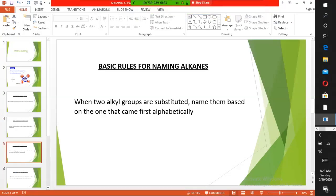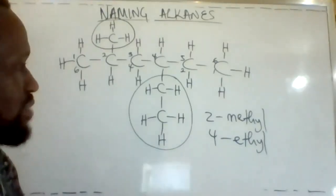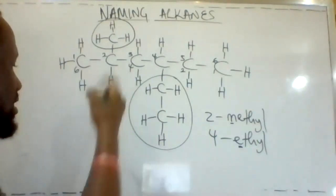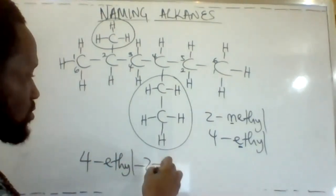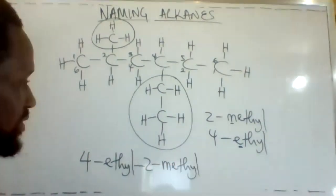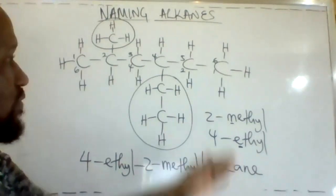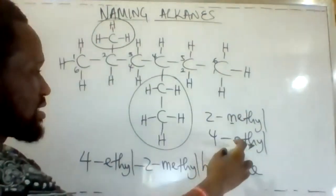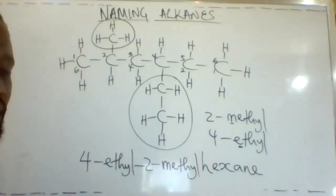Now let's apply a third rule: when two alkyl groups are substituted, name them based on which comes first alphabetically. E comes before M in the alphabet, so ethyl is named before methyl. The IUPAC nomenclature for this substance is 4-ethyl-2-methylhexane.